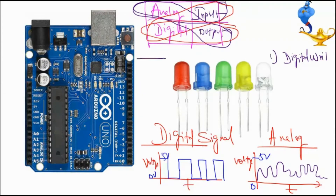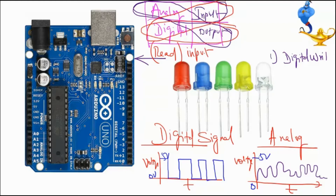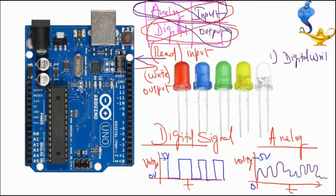When data is flowing towards the microcontroller, we call that input. Another name for that is read operation, because the Arduino reads the data. When the Arduino outputs data, we call that a write operation. So instead of input and output, for input I substitute read, and for output I substitute write.